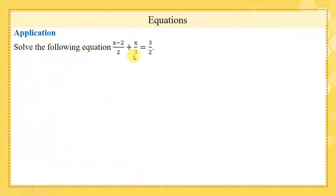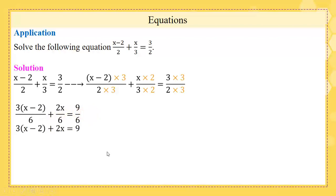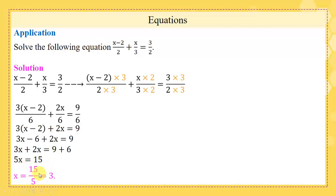Solve the following equation — please pause the video and try by yourself. Solution: first, take a common denominator of 6, multiply 2 by 3 and 3 by 2 to get the equivalent fractions, then eliminate 6 from the denominator. Expand and reduce both sides to get 5x equals 15. Therefore x equals 15 over 5, which equals 3.